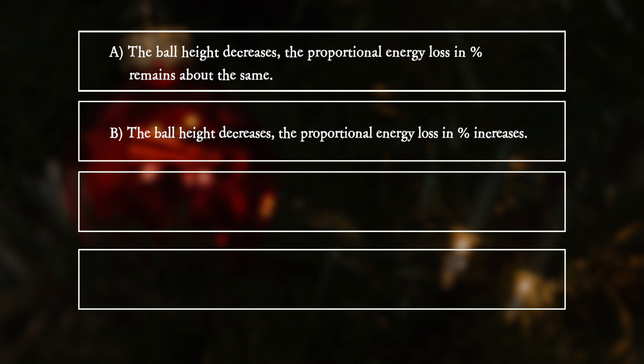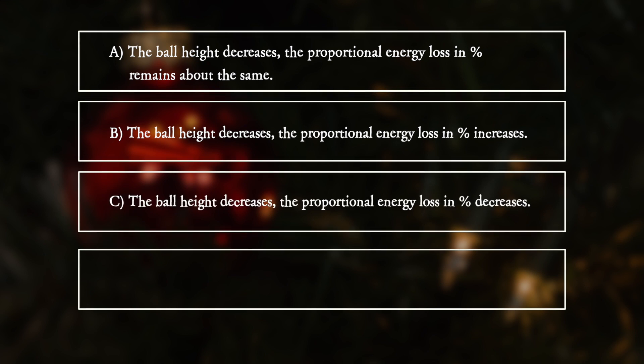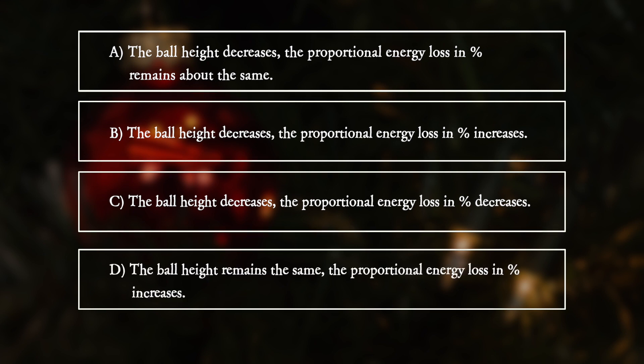B: The ball height decreases. The proportional energy loss in percentage increases. C: The ball height decreases. The proportional energy loss in percentage decreases. D: The ball height remains the same. The proportional energy loss in percentage increases.